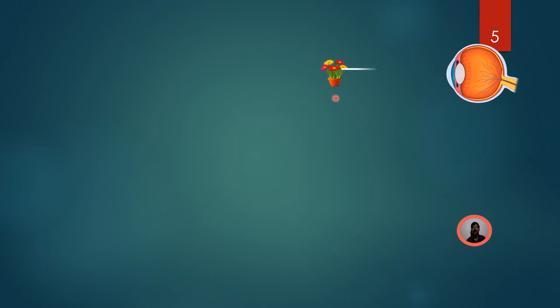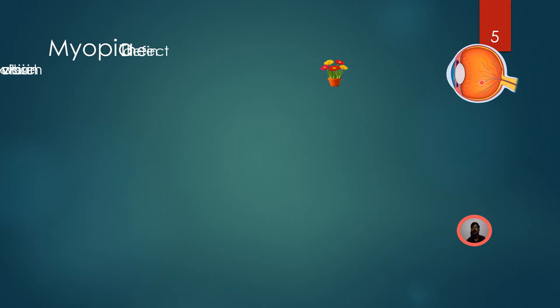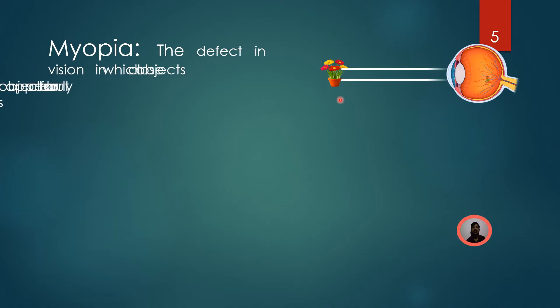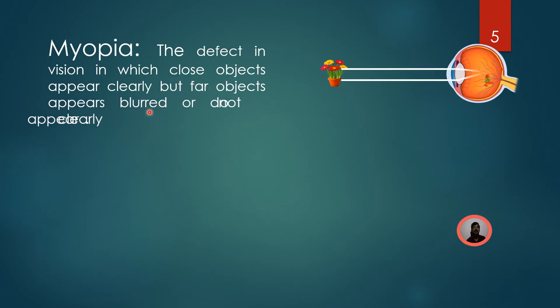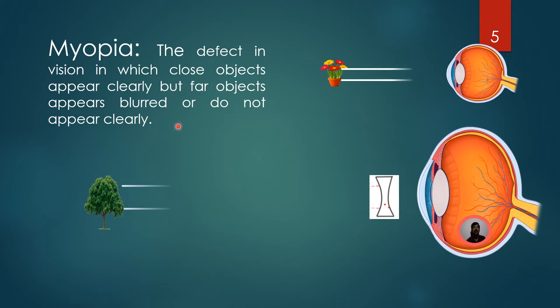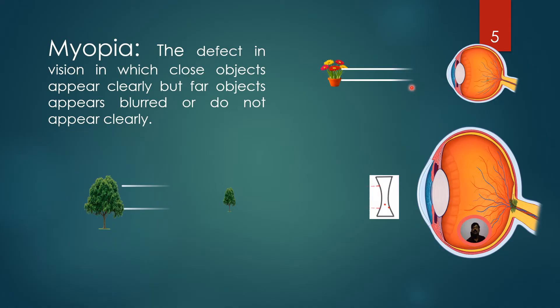Observe this animation carefully. Let us assume a far object. The rays coming from a far object are parallel to each other and the final image has to be formed on the retina. But in the case of a person suffering with myopia, the image is formed in front of the retina, before the retina. The defect in vision in which close objects appear clearly but far objects appear blurred is known as myopia or short sightedness.